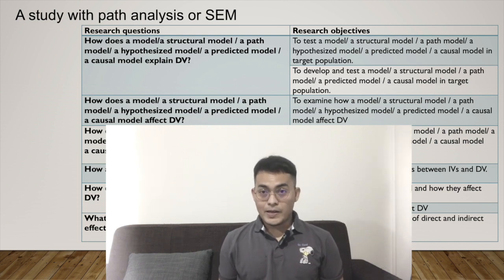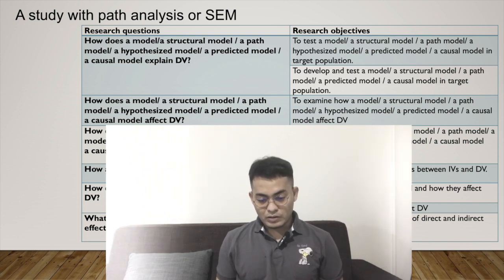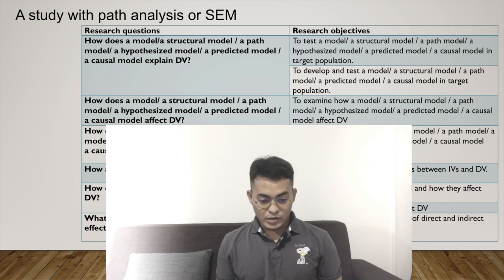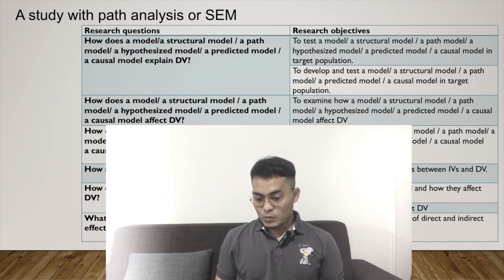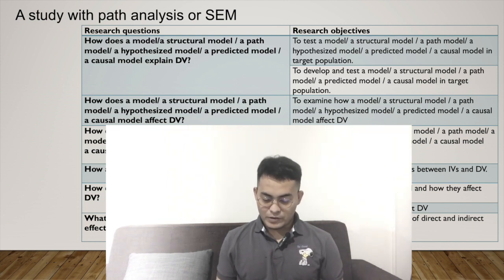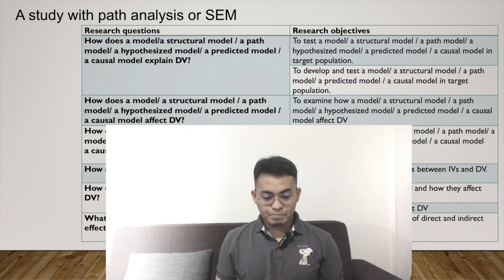The second question: how does a model — structure model, path model, hypothesis model, predictive model, or causal model — affect dependent variable? So here we use the word 'affect.' And the objective is: to examine how a model, or structure model through to causal model, affects dependent variable. The specific term depends on your design.